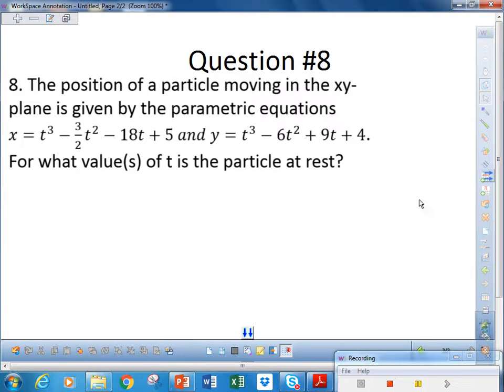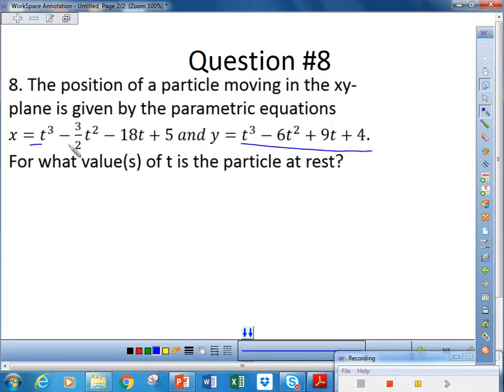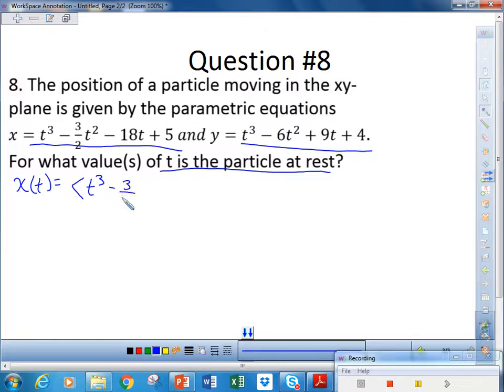So, we have a position of a particle and now it's given us both the x and the y coordinates in terms of t. And I want to know when is it at rest? When is it not moving? The position is given by x equals t cubed minus 3 halves t squared minus 18t plus 5 and y equals t cubed minus 6t squared plus 9t plus 4. Well, if we're talking about a particle being at rest, we need to know when its velocity is zero.